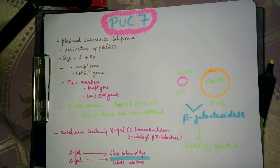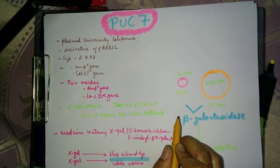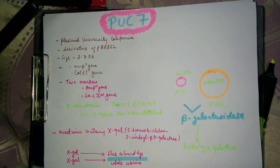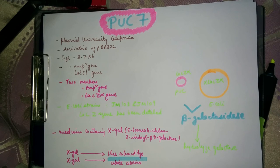White colored colonies indicate that the lac Z alpha gene of the PUC vector is non-functional due to our DNA insert, so active beta-galactosidase is not formed and X-gal is not hydrolyzed. For screening, we first grow the E. coli cells on ampicillin-containing medium to eliminate non-transformed cells that have not taken up the PUC vector. The colonies obtained are then replica-plated on X-gal containing medium, and white colonies are selected as they contain the recombinant vector.